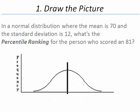To solve a percentile problem, the first step we want to do is draw the picture. It helps us to get a fairly good idea of what a person's percentile ranking should be approximately. Our particular question says, in a normal distribution where the mean is 70 and the standard deviation is 12, what is the percentile ranking for the person who scored 81?